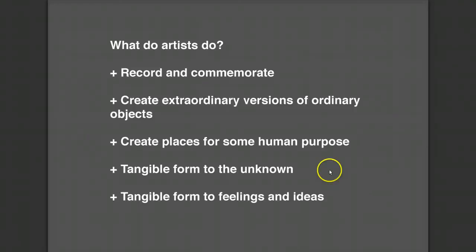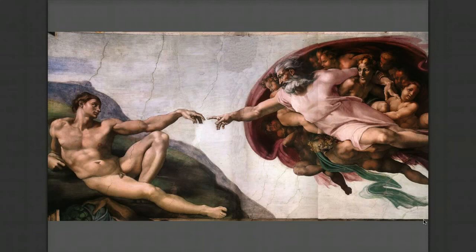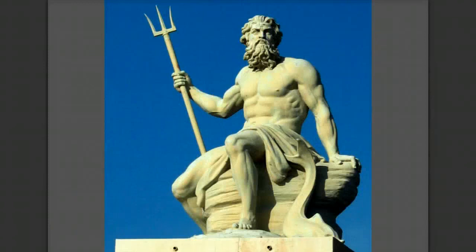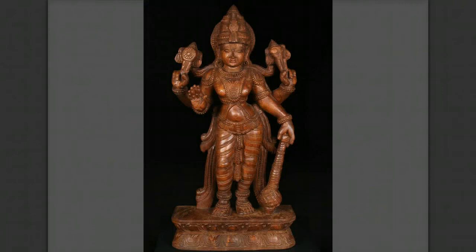The next example is tangible form to the unknown — giving us images of that which before art did not have an image. Historically, this area is seen as one of the most powerful areas for an artist. If you think about being an artist credited with giving an image of religious figures that your culture has worshiped, it can be a very powerful position — such as Michelangelo's Creation of Adam, statues of Greek gods like Poseidon, or Hindu images of Vishnu seen for the first time, giving the artist the power of creating things that once were not tangible.